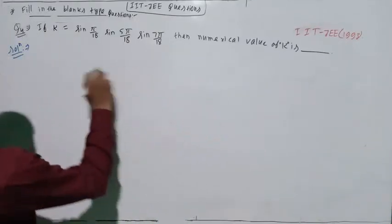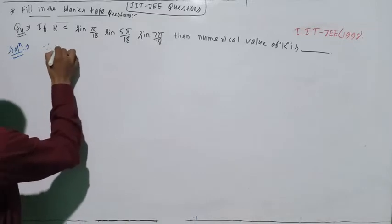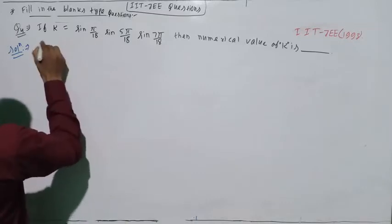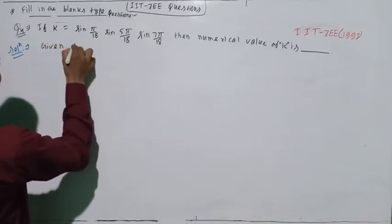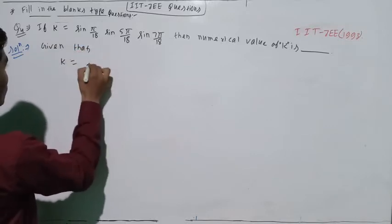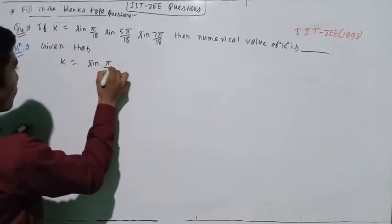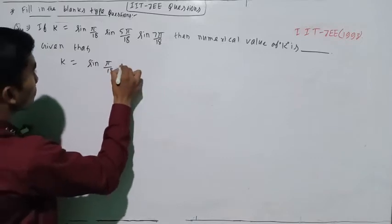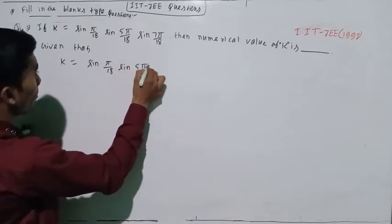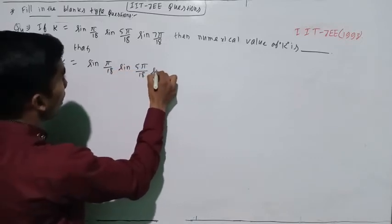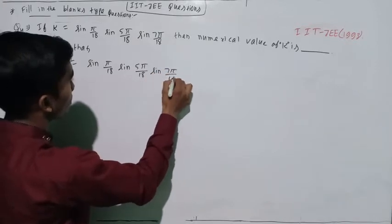Now let us see what happens. Given that k equals sin(π/18) times sin(5π/18) times sin(7π/18).